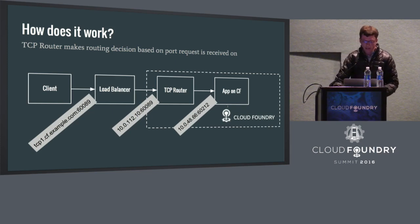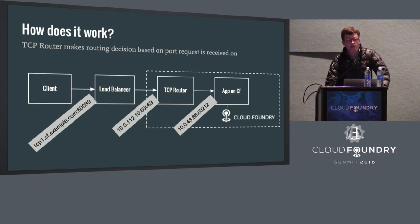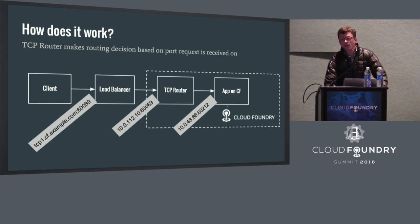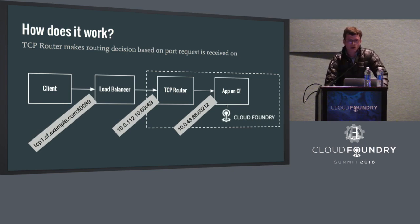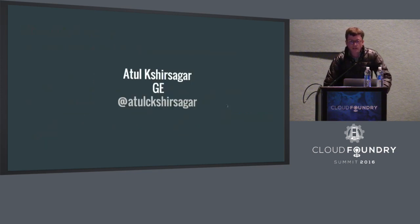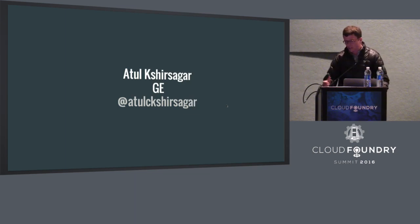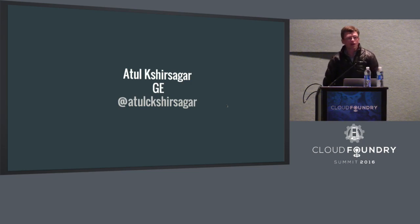The domain that a client sends the request to is used only for resolving DNS to the IP of the load balancer. After that, it's just IPs and ports. The TCP router maintains a dynamic mapping of the route port to backend host IP and ports for application instances. With that, I'd like to welcome Atul Krishsagar to the stage from GE, who will share GE's interest in TCP routing and give us a demo.